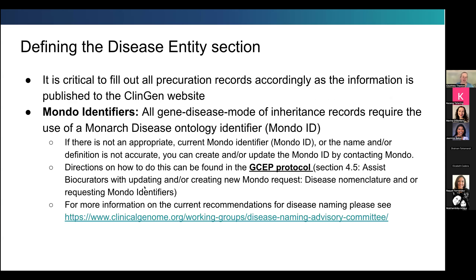Within the defining the disease entity section, because we now have the gene tracker and GCI integration, it is extremely important to capture the pre-curation information and the OMIM phenotypes that correspond with your final MONDO ID for your gene disease validity curation. You must fill out all pre-curation records, as these are published to the website. They are part of the gene curation, and it is exceedingly important to provide the most accurate representation of your curation.